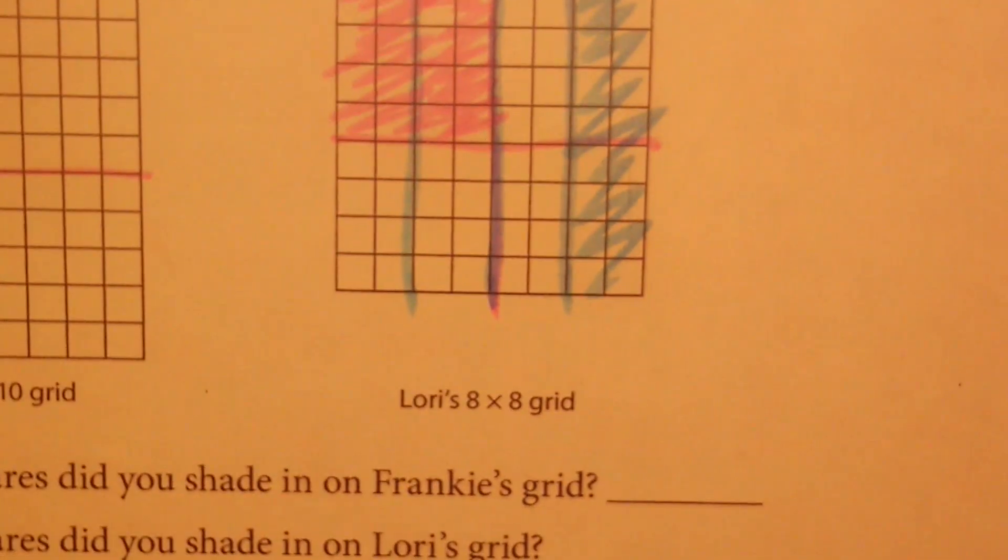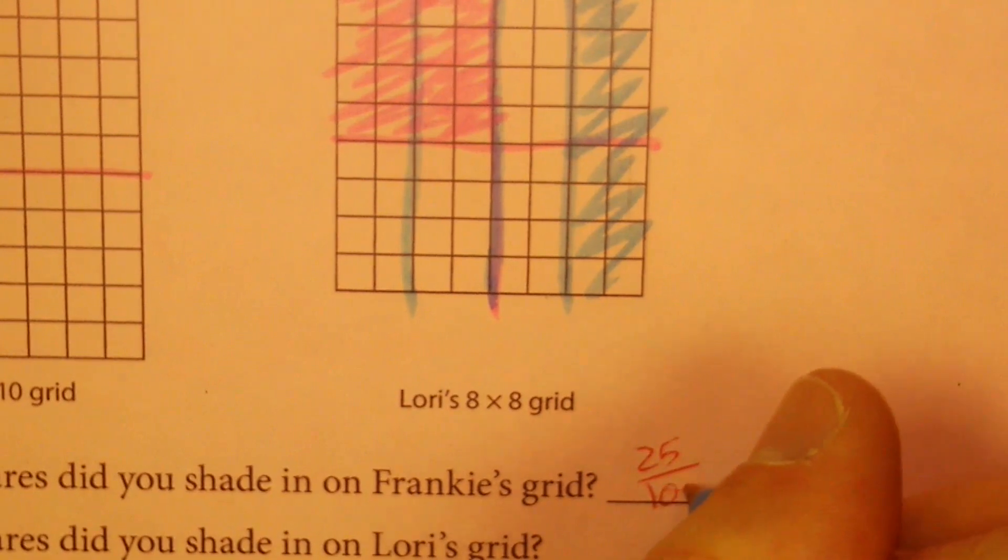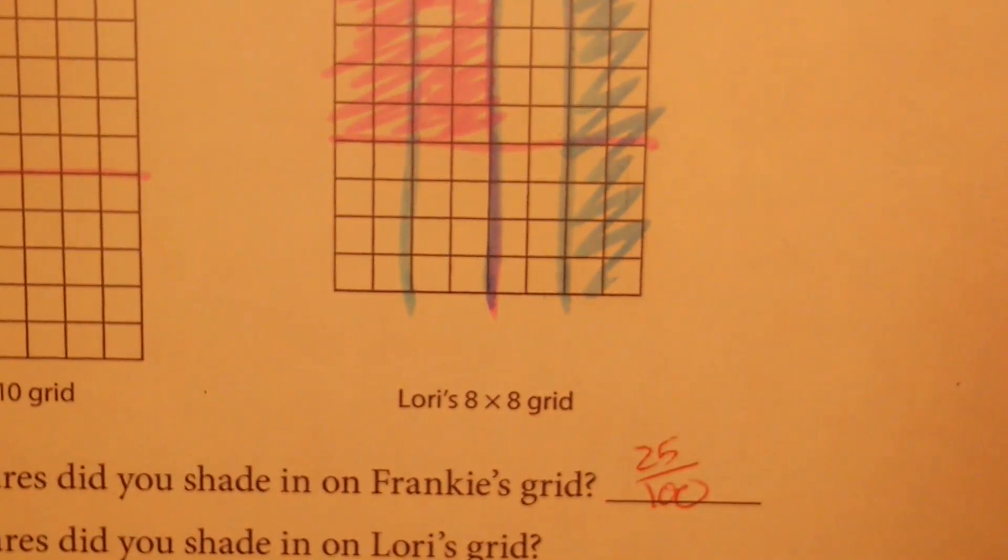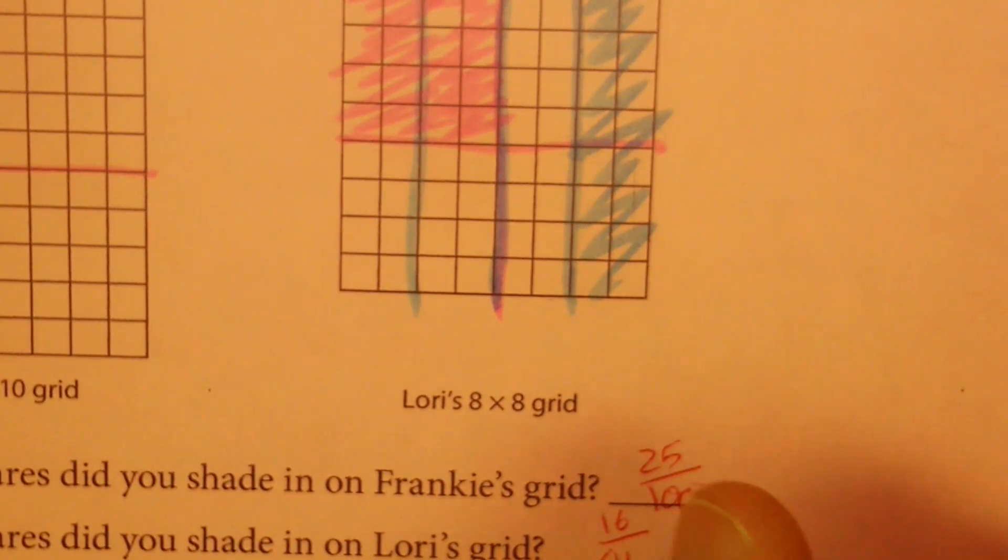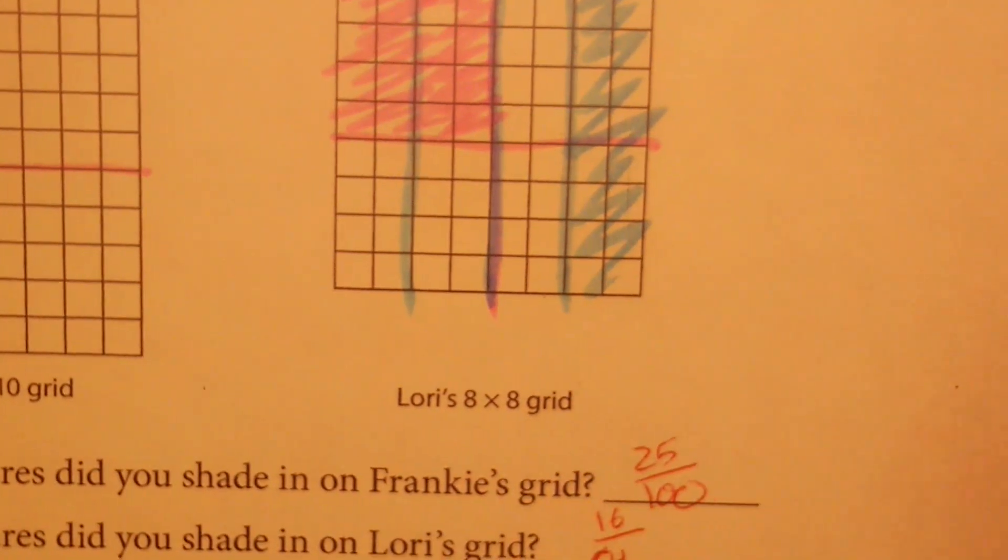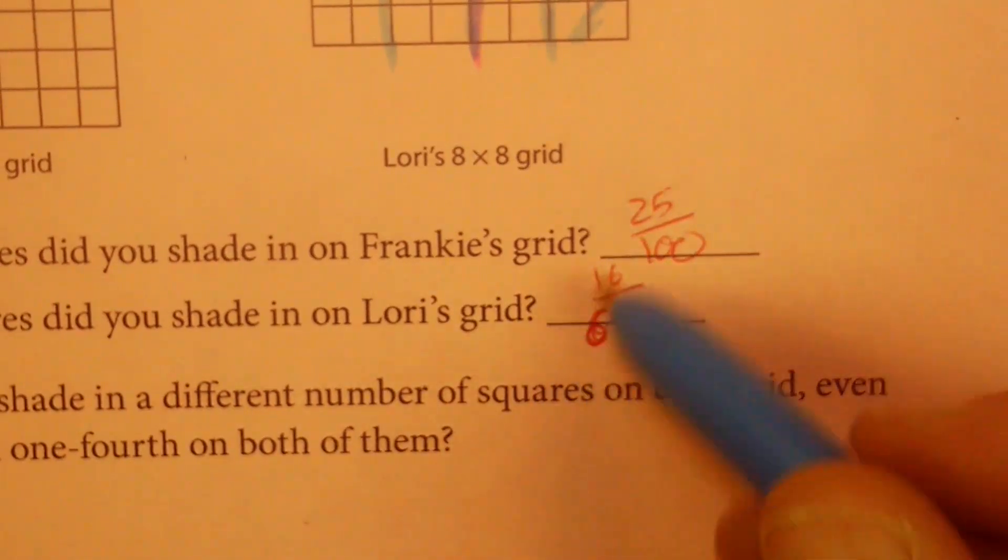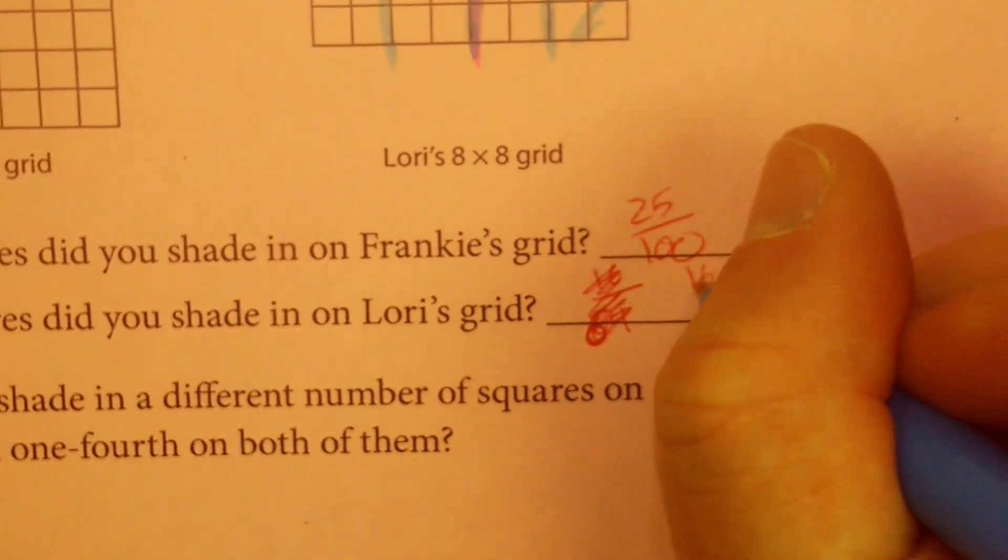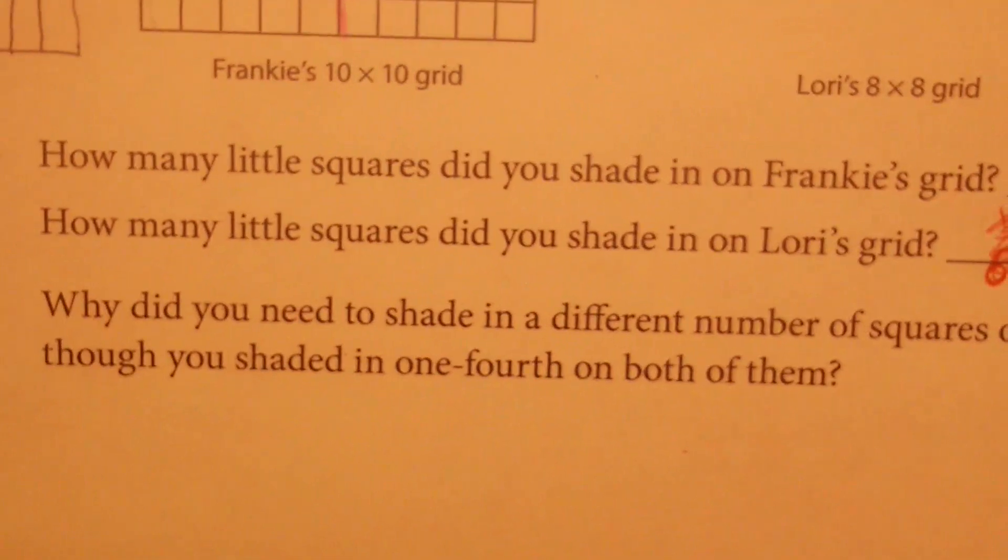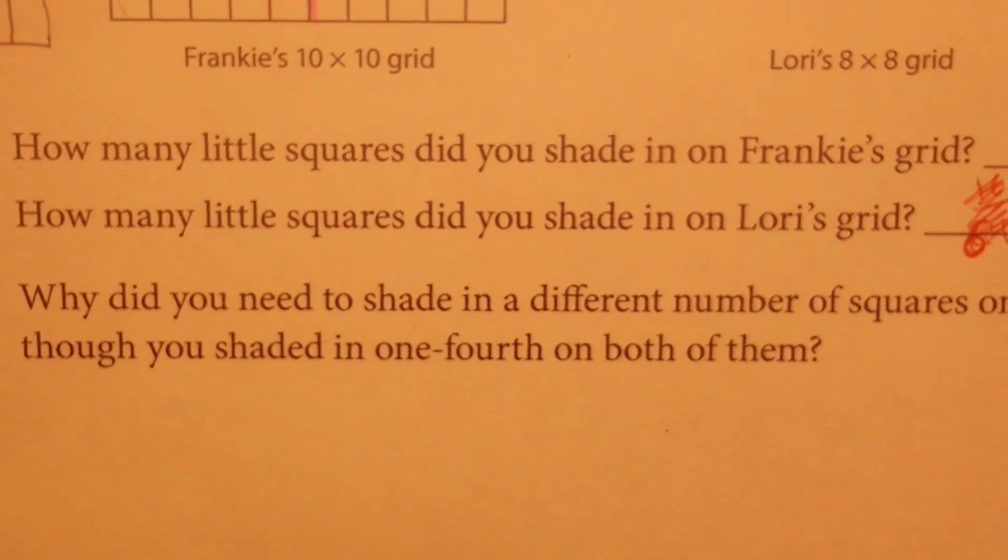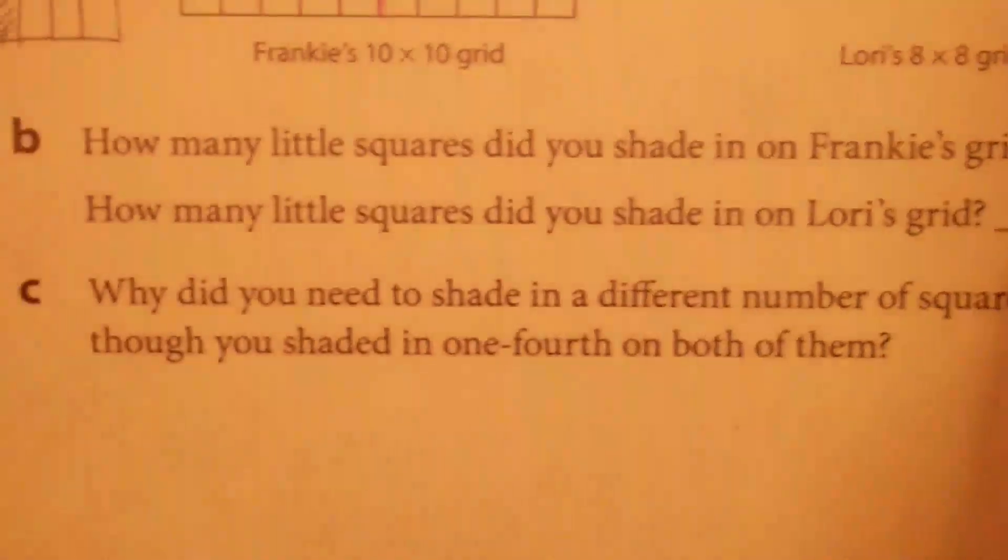So, how many little squares did you shade in on Frankie's? Well, we already said that out of 100, 25 of the 100 squares is one-fourth. In Lori's grid, though, we just said that we did 16 of the, what is it, 8 times 8 is 64 of the 64 squares. That's a 6, by the way. It's hard to read. That's supposed to say 16 out of 64. And then last but not least, it says, why did you need to shade in a different number of squares on each grid, even though you shaded in one-fourth on both of them? And do you know what I would say?